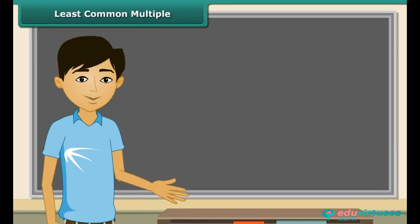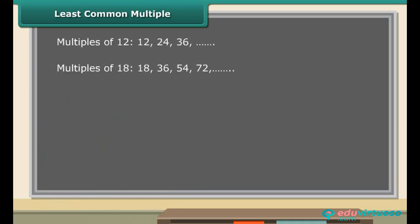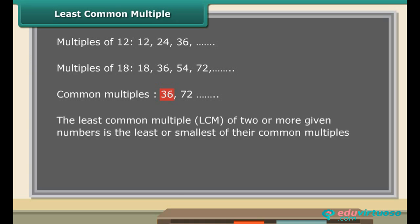Recall that common multiples of two numbers are those numbers which are multiples of both the numbers. Let us now use this knowledge to find the least common multiple of two numbers. Consider the two numbers 12 and 18. The multiples of 12 are 12, 24, 36 and so on. Similarly, the multiples of 18 are 18, 36, 54, 72 and so on. The common multiples of both numbers are 36, 72 and so on, but 36 is the smallest among these. Therefore 36 is the LCM of 12 and 18. The least common multiple, LCM, of two or more given numbers is the least or smallest of their common multiples.